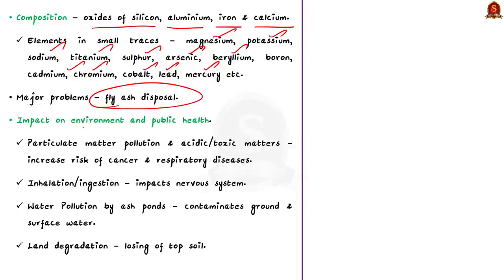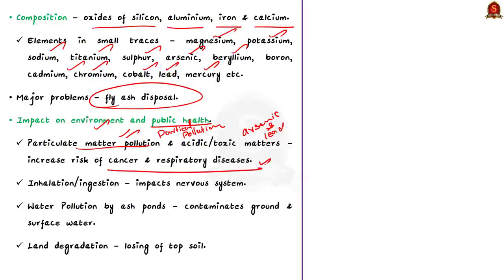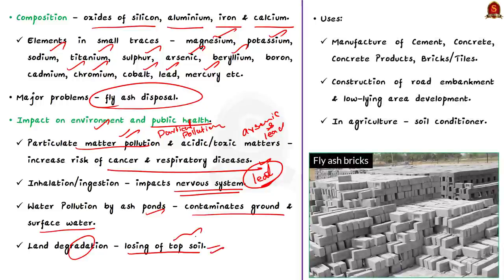First of all, fly ash is a particulate matter, so it causes particulate matter pollution or particle pollution. Therefore, it is basically an air pollutant and it contains acidic toxic materials such as arsenic and lead. These increase the risk of developing cancer and other respiratory diseases. Inhalation or ingestion of toxins in fly ash can also have impacts on the nervous system. It also causes water pollution especially when stored in slurry ponds, contaminating ground and surface water. This also leads to land degradation which results in losing of precious topsoil.